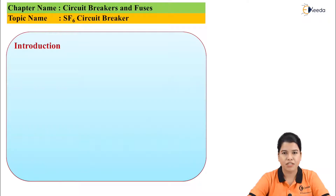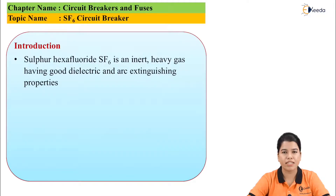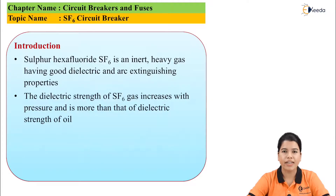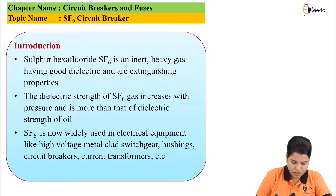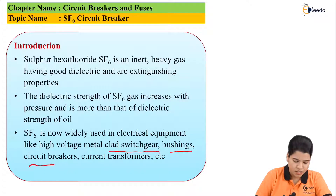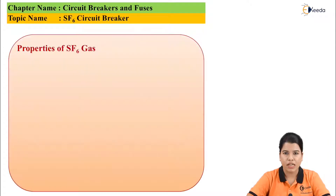The SF6 circuit breaker basically uses SF6, that is sulfur hexafluoride gas, which is inert in nature and has a very good dielectric strength. As the pressure increases, the dielectric strength of the sulfur hexafluoride gas also goes on increasing, which assists in arc quenching. Because of the properties of SF6 gas, it is nowadays widely used in various types of switchgear devices for the protection of metal clad switchgear, bushings, circuit breakers, and current transformers.